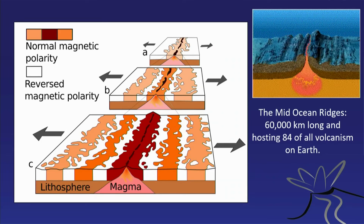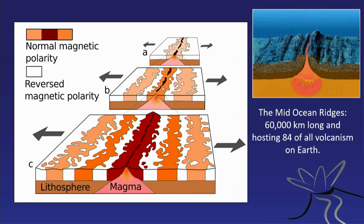Rocks that formed a long time ago tend to be further towards the margins, and rocks that are very young tend to be in the center, near the spreading ridge. This is how we think seafloor spreading works.